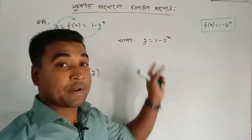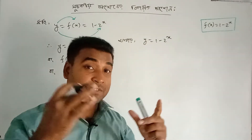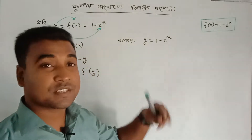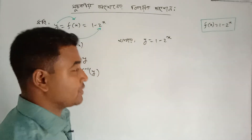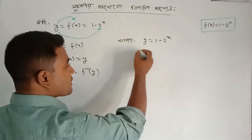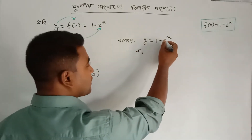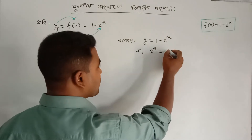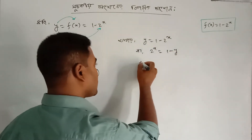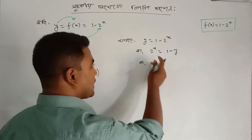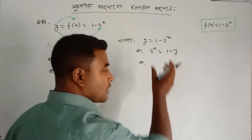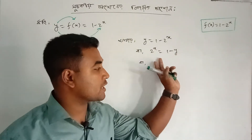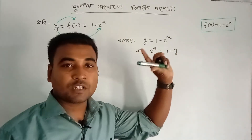This way, both the range and the domain are of the same system. 2 to the power x is equal to 1 minus y.